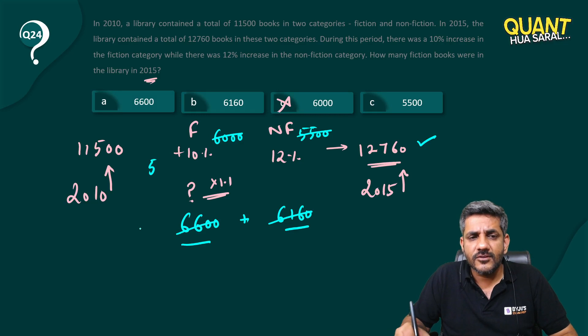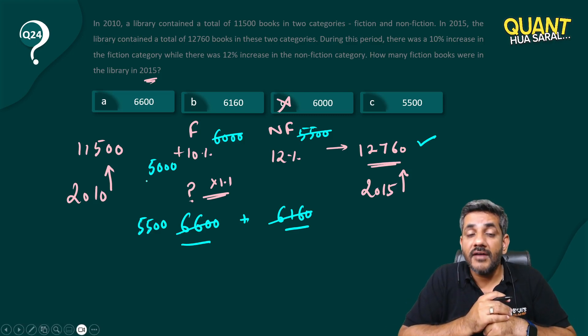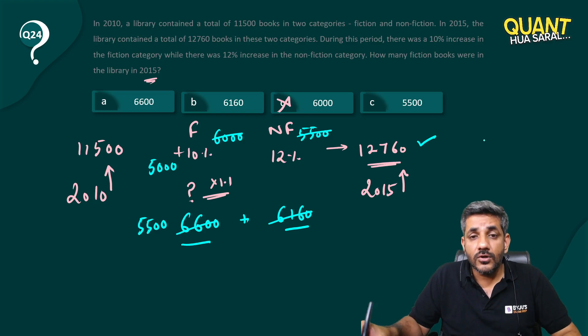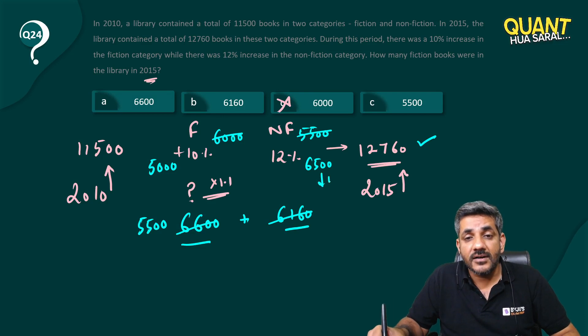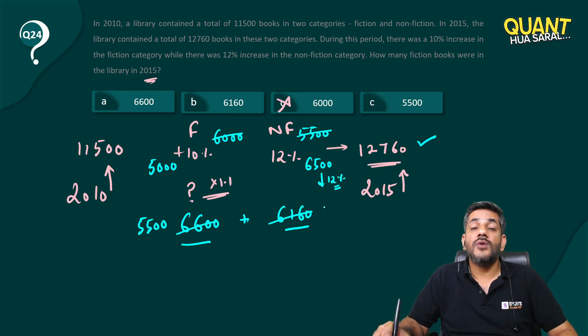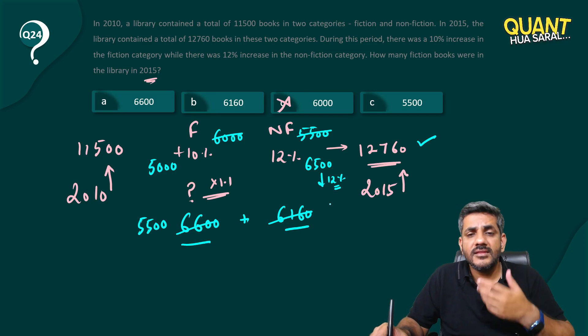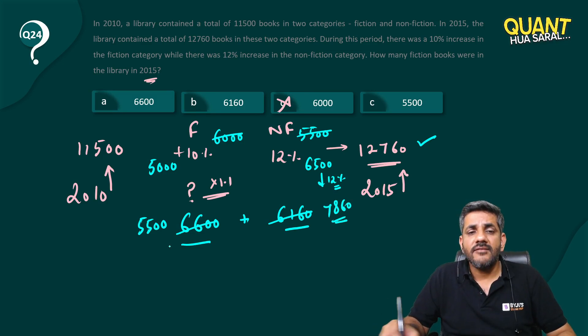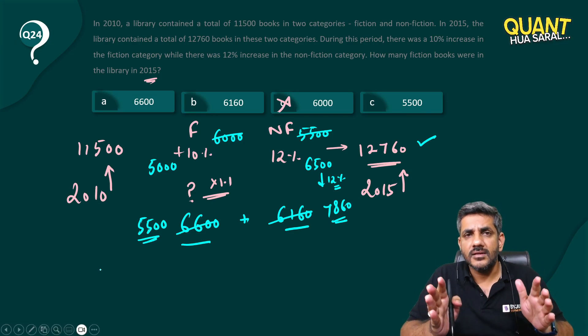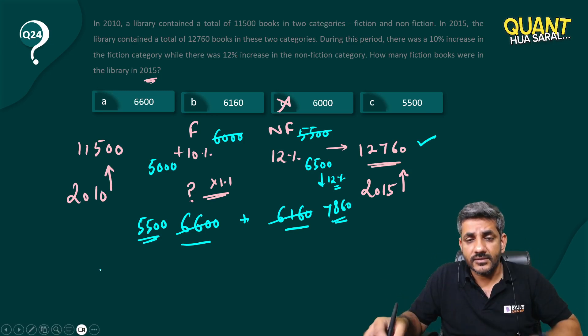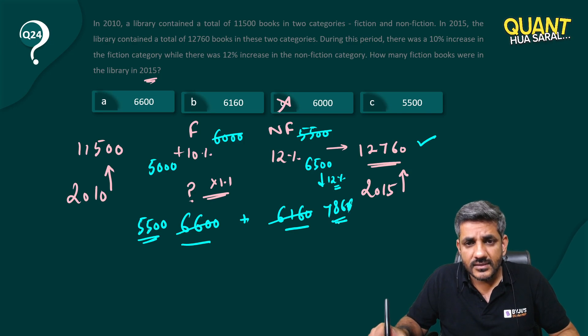So if I take it as 5,500, the new number, that means the previous number was 1.1 when divides 5,500 gives 5,000. So it was 5,000 before. That means non-fiction was 11,500 minus 5,000, 6,500 and 6,500 increased by 12%. How much would that become? I think it would become some 7,860. Now 7,860 plus 5,500 when I add them, it does not give me 12,760. I am sorry, it is not 7,860. I think it is 12,560, 60 and 788 is the increase.